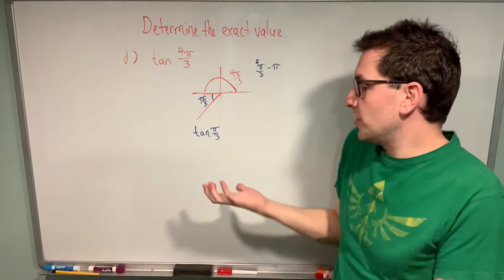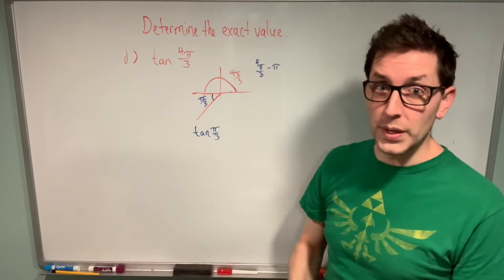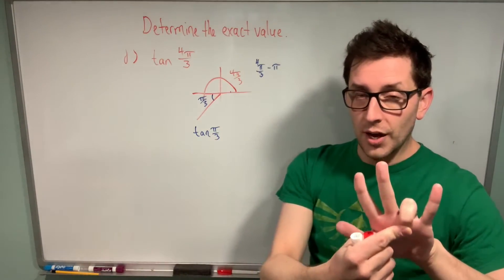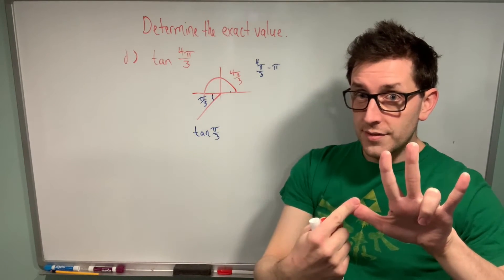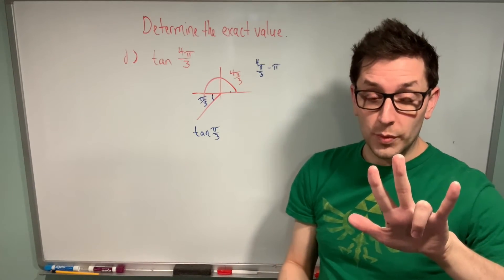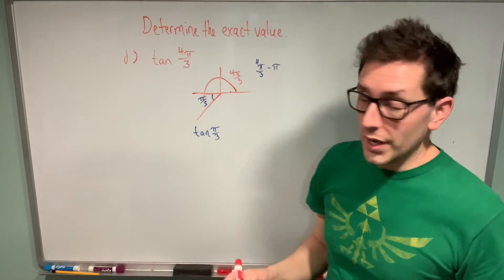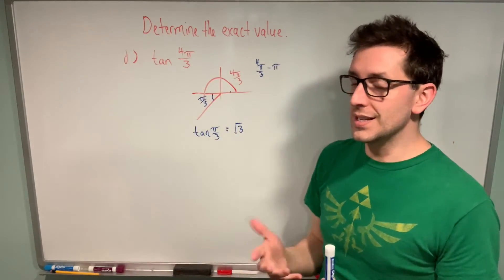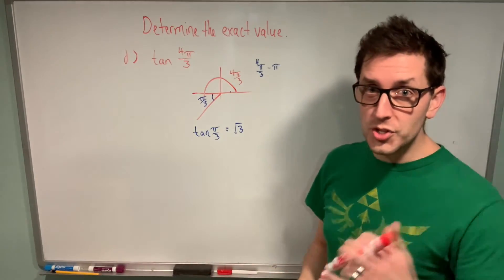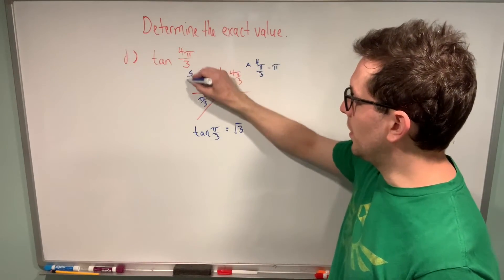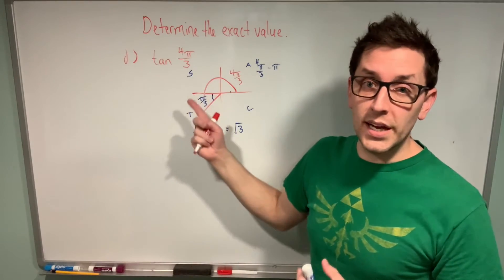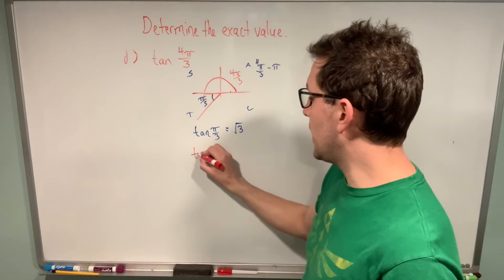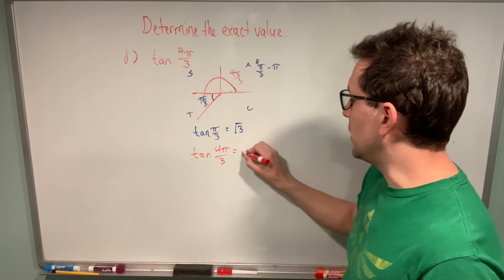So we ask ourselves what the tan of pi over three is. Using the hand trick: go to pi over three which is 60 degrees, put that finger down. With tan, you take the square root of the number of fingers to the left and divide by the square root of the number of fingers to the right. That gives us root three over root one, also known as root three. So the tan of pi over three is root three. But is that enough to conclude the tan of four pi over three is also root three? We have to check the cast rule — in this quadrant, only tan is positive. Since we're working with tan, the tan of four pi over three is going to be a positive root three.